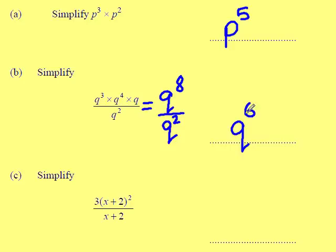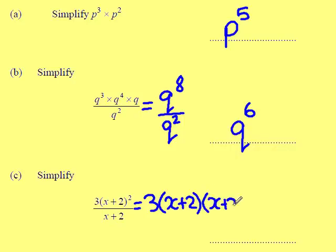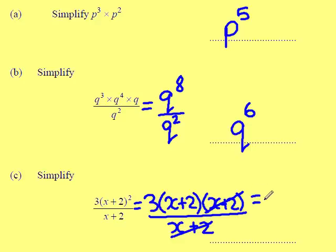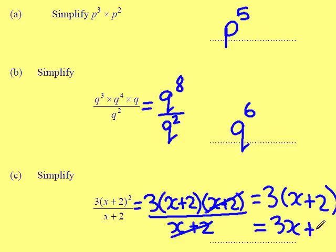Simplify 3 open brackets X plus 2, all squared, divided by X plus 2. I can rewrite the top as 3 lots of X plus 2, because it's squared it means there's 2 lots of it, all divided by X plus 2. Now I can cancel one of those X plus 2's from the bottom with one from the top, leaving me with just 3 lots of X plus 2, which simplifies to 3X plus 6 as your final answer.